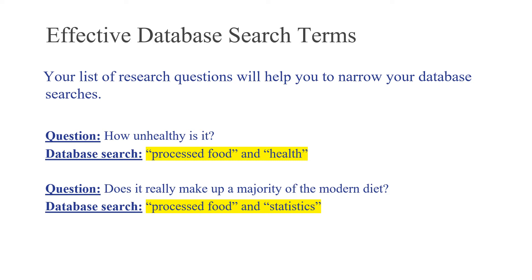For something like 'does it really make up a majority of the modern diet?' — that's far too wordy to search in EBSCO or ProQuest. Instead, put 'processed food' in quotes and with the AND operator put 'statistics' in quotes. That will give you statistics about processed food. You can also use a database like Statista — a fantastic database with charts, graphs, and statistics on all kinds of topics. You'll probably find some good statistics you could use in your paper.